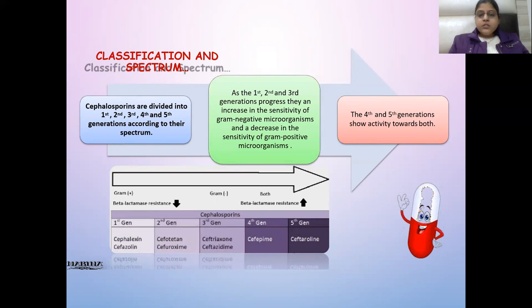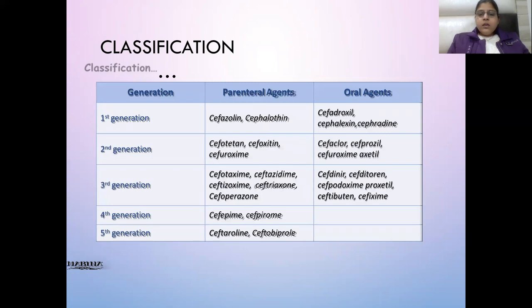The first generation drugs have an 'A' after 'Ceph' in their name. These include Cefazolin, Cephalothin, Cefadroxil, Cephalexin, and Cephradine. Fourth generation drugs have 'PIE' in their name: Cefepime and Cefpirome. Fifth generation drugs have 'role' in their name: Ceftaroline and Ceftobiprole.